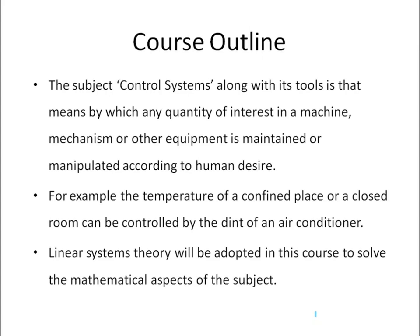Control systems is the tool by which any quantity of interest in a machine, mechanism, or other equipment is maintained or manipulated according to human desire. Because ultimately we want the human interest to be satisfied — if it is not, we don't appreciate the design. The final story of all this hard work is that human desire, interest, and service are satisfied. An example is the temperature of a closed place being controlled using an air conditioner.